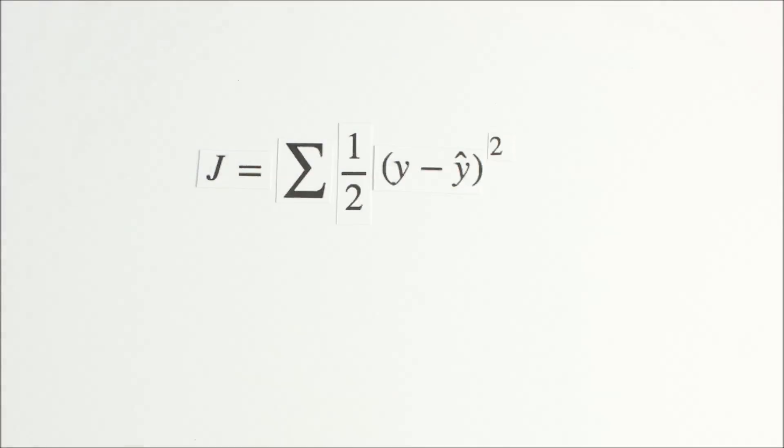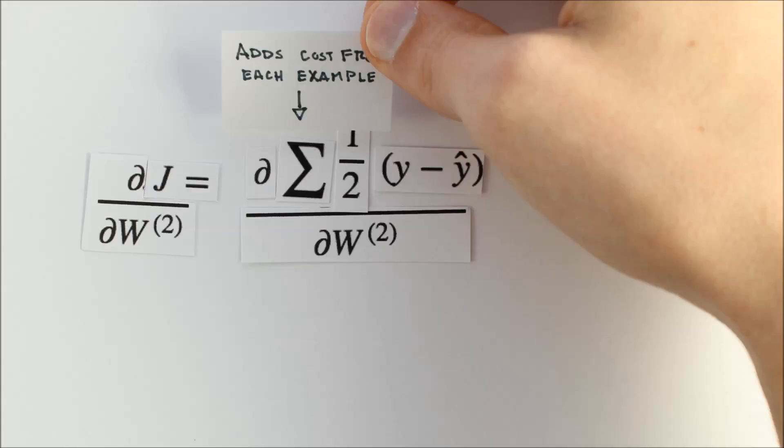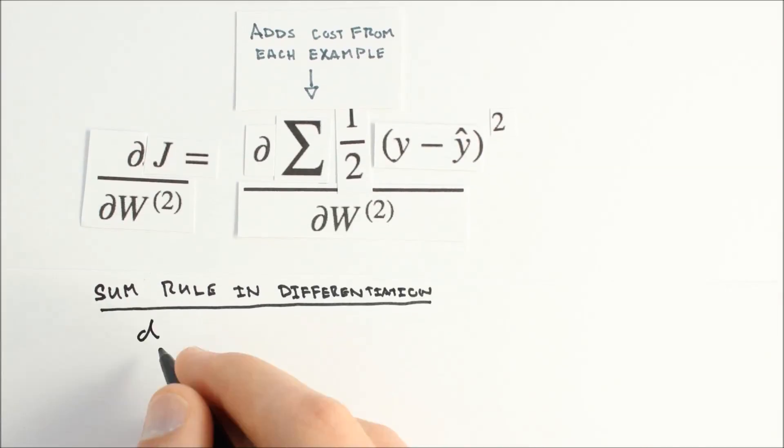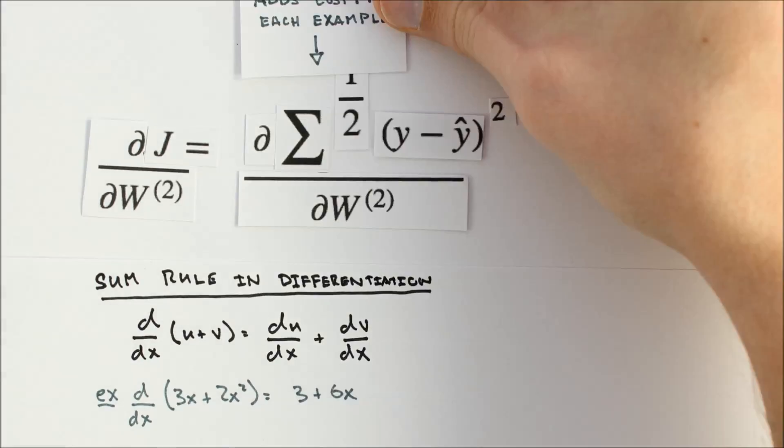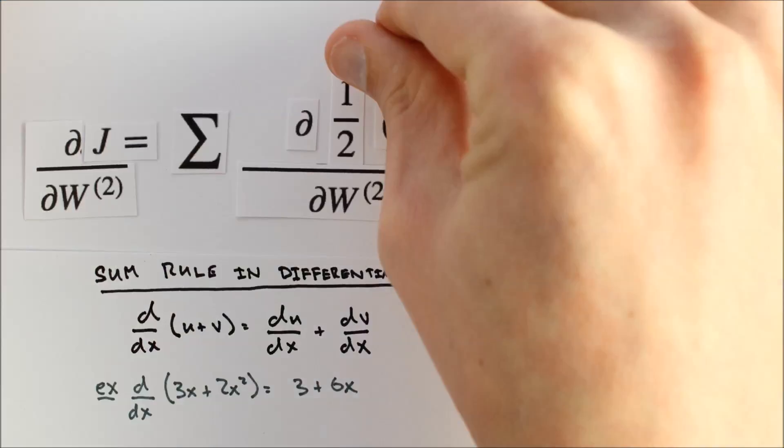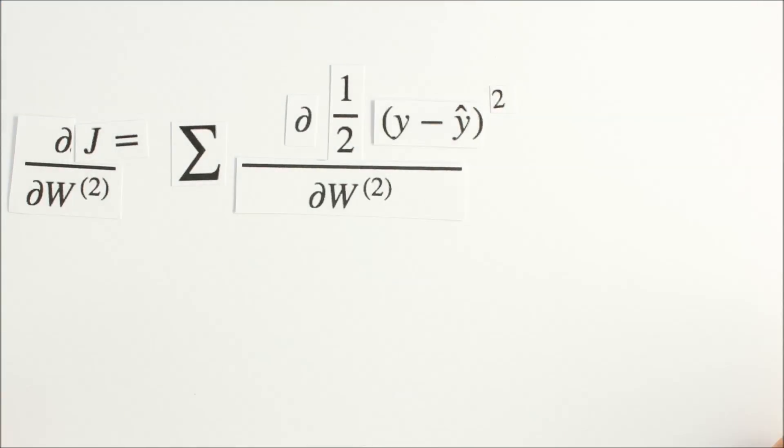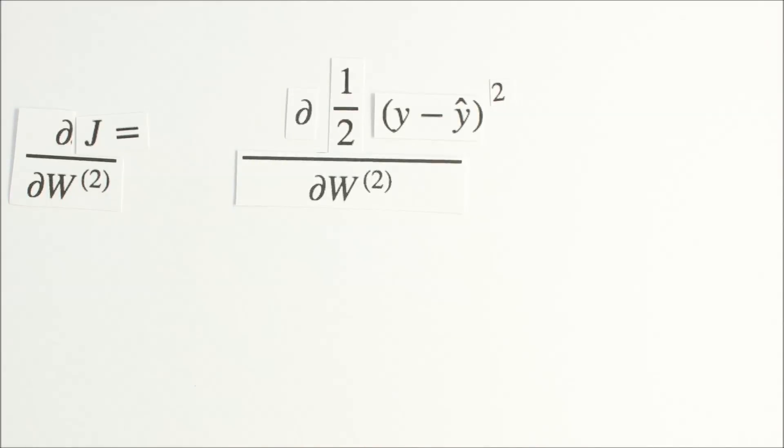Let's work on djdw2 first. The sum in our cost function adds the error from each example to create an overall cost. We'll take advantage of the sum rule in differentiation, which says that the derivative of the sums equals the sum of the derivatives. We can move our sigma outside and just worry about the derivative of the inside expression first. To keep things simple, we'll temporarily forget about our summation. Once we've computed djdw2 for a single example, we'll go back and add all our individual derivative terms together.